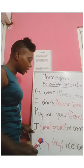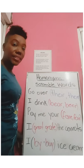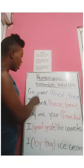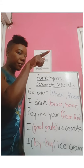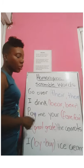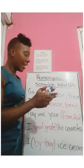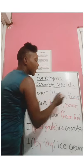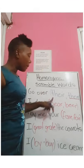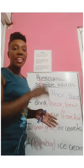Now I have an activity we can do together — we're going to choose the correct word in each sentence. "Go over there" — which 'there' do we use: T-H-E-I-R or T-H-E-R-E? T-H-E-R-E, because this is the one that indicates a place. But T-H-E-I-R shows ownership — "The book is in their room."